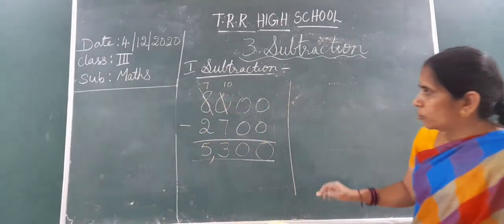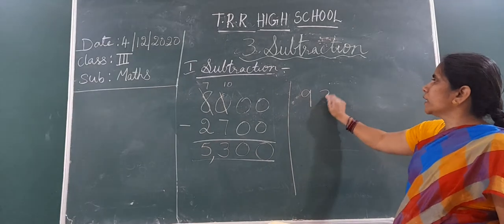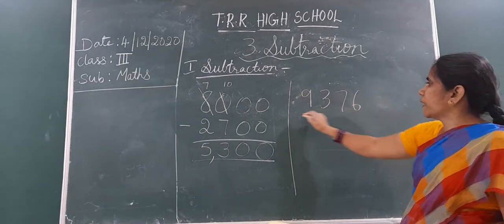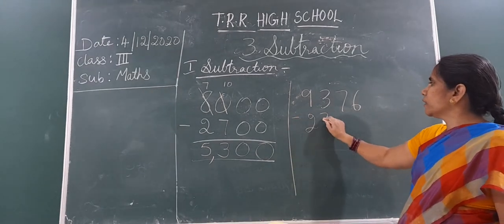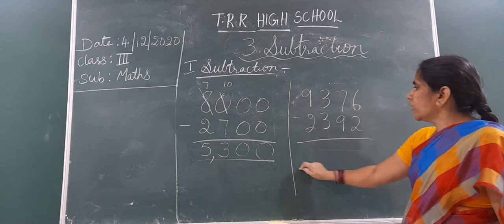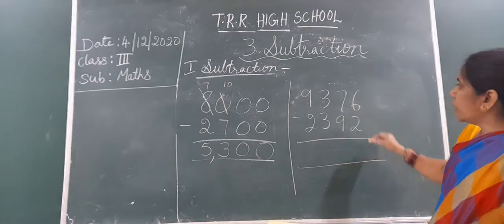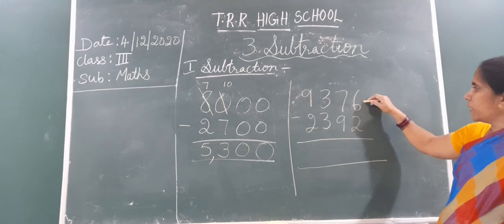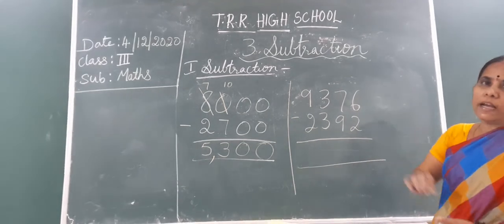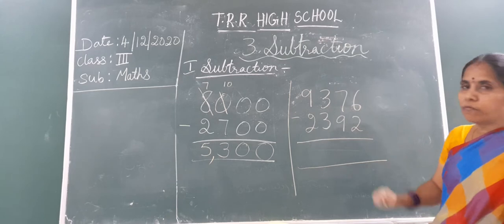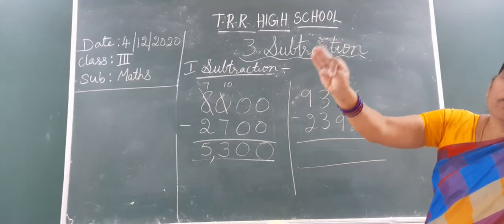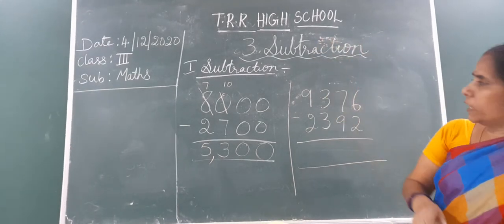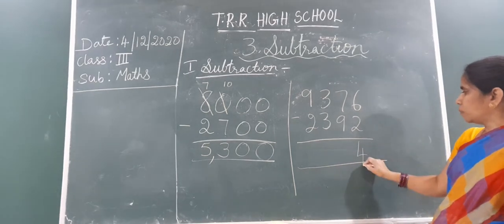One more sum also we will do. Here 9376 minus 2392. Suppose, if the number is like this. How many fingers you open? 4 fingers. Write 4 in the ones place.